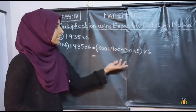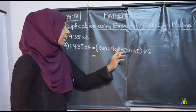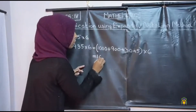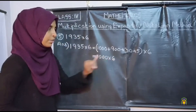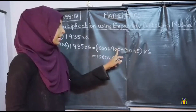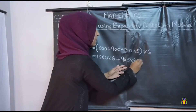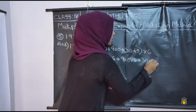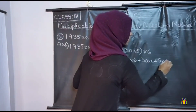We want to multiply each term by 6. Here there are 4 numbers, so we multiply each one by 6. So: 1,000 into 6, plus 900 into 6, plus 30 into 6, plus 5 into 6.